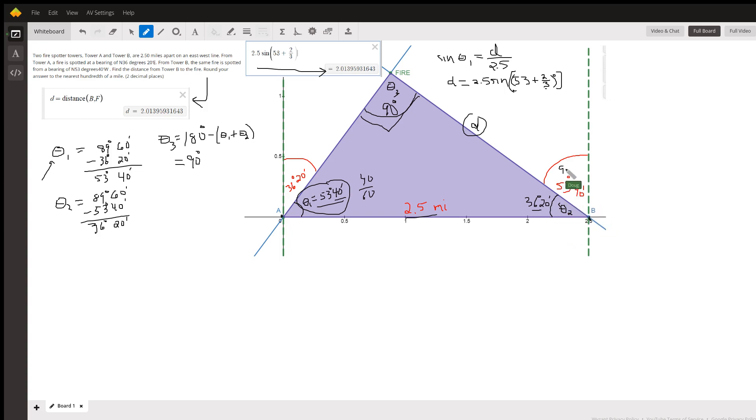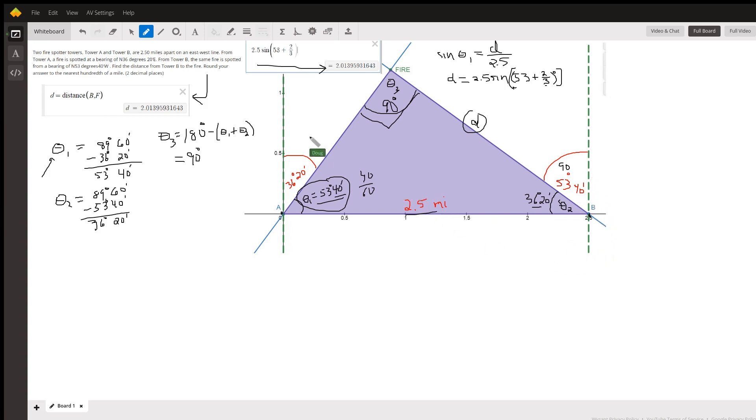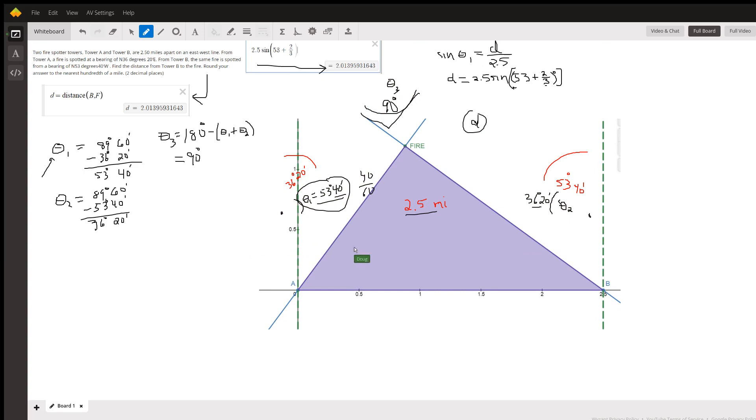So we're going for, whoops slid that up too far, but anyway if you find the equation of those two lines you could find the point of intersection and then find the distance from A to B, which is...